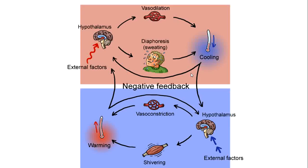Summarizing: if body temperature rises, the hypothalamus senses this and causes cutaneous vasodilation and sweat production, leading to heat dissipation and a drop in temperature. If body temperature falls, the hypothalamus activates peripheral vasoconstriction to conserve heat and initiates shivering to produce heat through muscular metabolic activity, thereby warming the body and maintaining temperature.